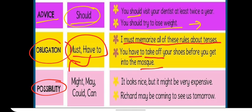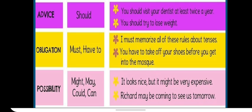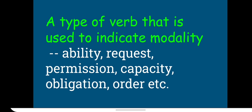The last one is to show possibility. We already discussed it like can and may, but might is also used. When you are not asking questions, might and may are used to show possibility. Like it looks nice, but it might be very expensive. We are not sure it is expensive, but there is a chance that it will be expensive. Richard may be coming to see us tomorrow. He may be coming, but are we sure? We are not sure because it's for possibility. So a type of verb that is used to indicate modality. What is the usage of modal verbs? It is to indicate modality, which means ability, request, permission, capacity, obligation, orders, requests, etc.